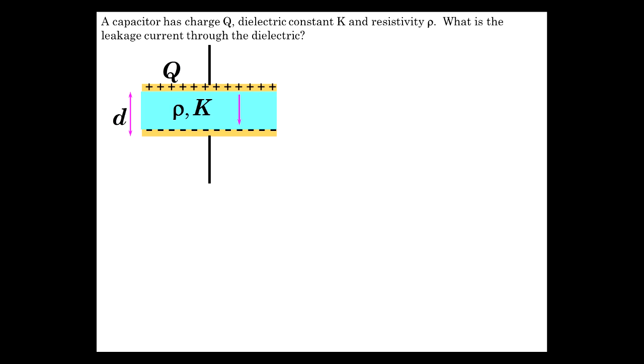There's an E field that's established across the plates because of the charge separation, and current is volts over resistance. We'll start with that.